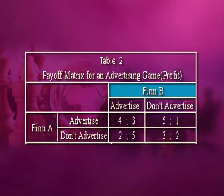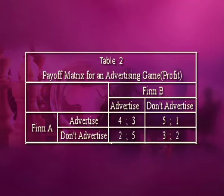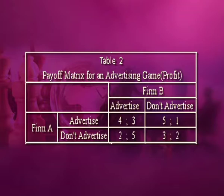Suppose there are two firms A and B. There are two strategies for each firm: to advertise or not to advertise. Firm A expects to earn higher profits if it advertises. If firm B advertises, firm A will earn a profit of 4 if it also advertises and 2 if it does not. Therefore, firm A should advertise if firm B does. If firm B does not advertise, firm A will earn a profit of 5 if it advertises and 3 if it does not. This shows that A should advertise irrespective of whether firm B advertises or not. Firm A's profit will be higher if it advertises regardless of what firm B does. Therefore, the dominant strategy for firm A is to advertise.